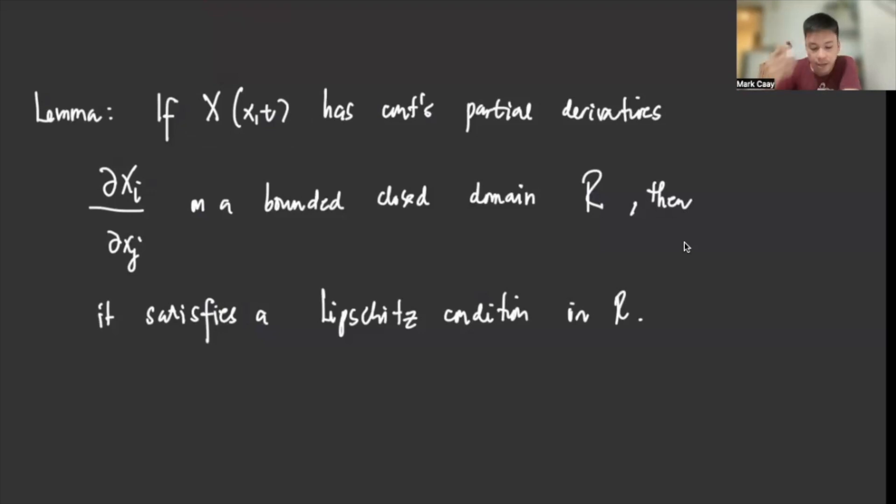First, given that you have a vector-valued function, this one, and this vector-valued function has a continuous partial derivative. So when we take the partial derivative of this vector-valued function with respect to X sub j, and this partial derivative is continuous on a bounded domain R, then if it's continuous, it automatically satisfies the Lipschitz condition.